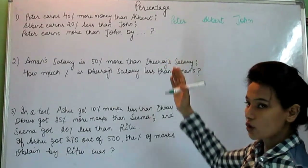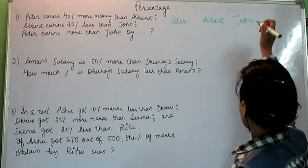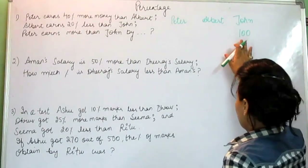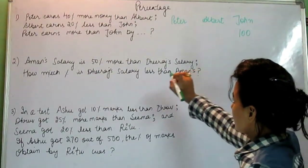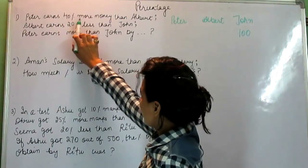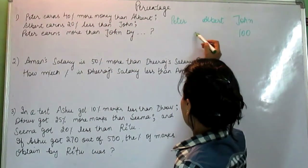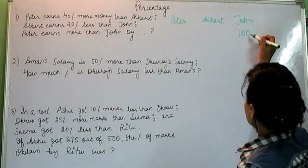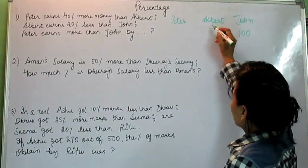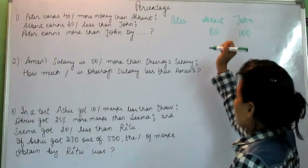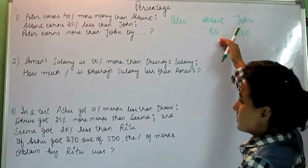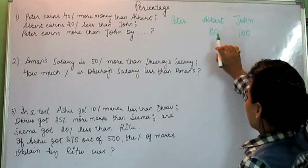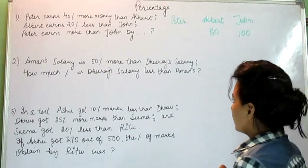The trick to solve such questions is to start from the end. We put 100% for John. Now see the question — Albert earns 20% less than John. So if John is 100, Albert will be 20% less than John, which means Albert will be 80.